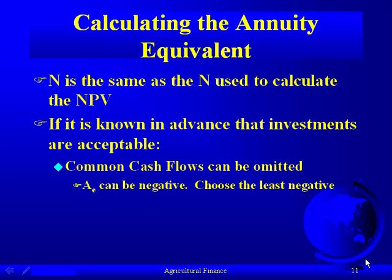If you ignore common cash flows that happen to be revenues, your decision criterion — in this case the annuity equivalent — can actually be negative. When comparing tractors based only on costs, the annuity equivalent may well be negative. In that case, you choose the least negative one. You've already determined the investment is viable and profitable, so you don't need to worry about that negative value in terms of viability — you're just looking at the ranking.